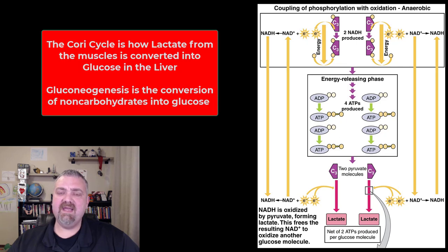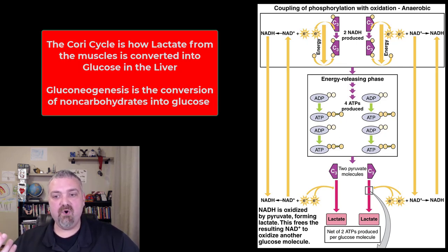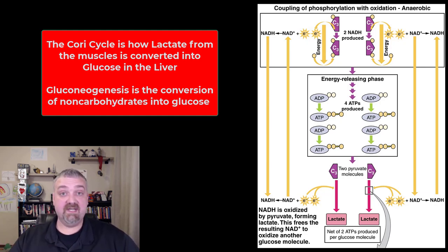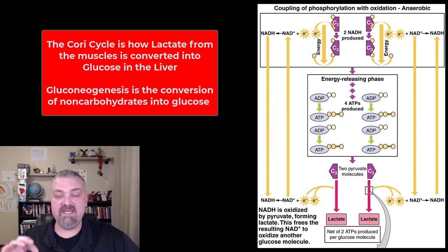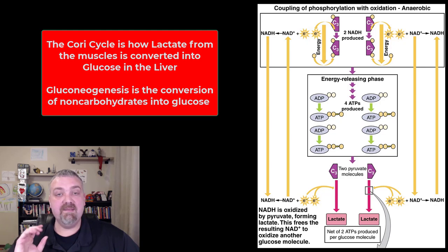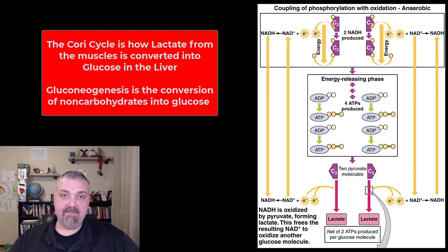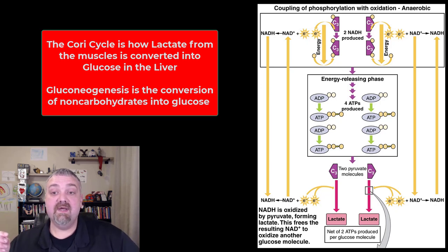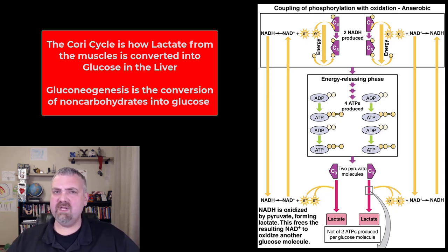Another cool way to look at it: once oxygen returns, you have something called the Cori cycle, where lactate can go back and become pyruvate, which means it could then generate glucose in a process called gluconeogenesis — the creation of new glucose. So lactate can be used for fuel and can regenerate glucose. This is also where the idea of oxygen debt comes from — if you push really hard, exercising and training really hard, you have built up some lactate.